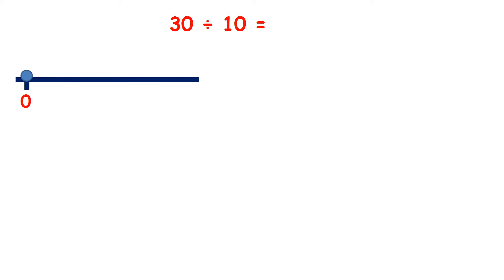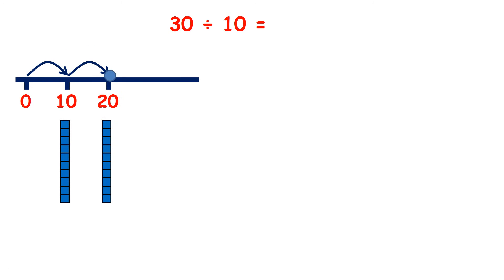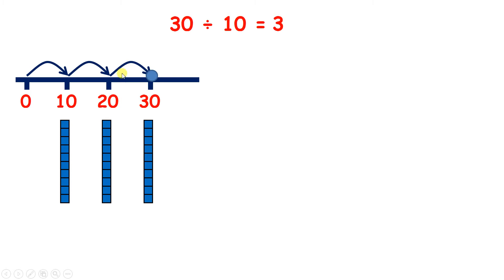So now let's practice dividing by 10. Though division isn't really repeated addition — we're not counting forwards when we divide, but backwards — we know that if we count on in steps of the divisor until we get to our dividend, we can count the number of jumps to answer our question. So we can count in steps of 10 until we get to 30: 10, 20, 30. We need 3 jumps to get to 30, so our answer is 3. We could also have started at 30 and taken away 10 three times to get our answer of 3.